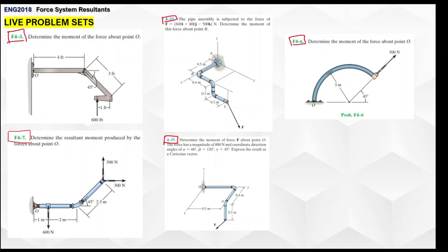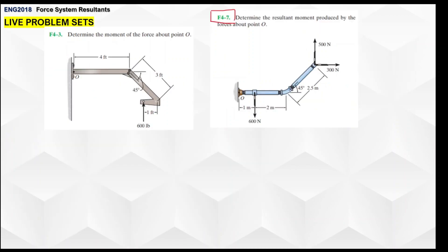Let's start with 4-3. It's pretty simple — we're just going to determine the moment of force about point O. Same also with 4-7: determine the resultant moment produced by the forces about point O, but unlike 4-3 this one has only one force. We're given the dimensions of the diagram. The solution uses: moment equals force times perpendicular distance.